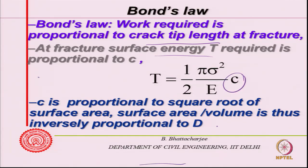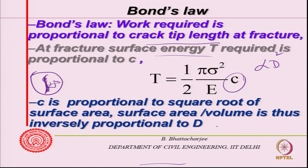So this C - supposing I am breaking a large aggregate down into smaller aggregate, the C would be related to the new one I am creating. It is related to the square root of surface area because if the diameter changes, surface area is proportional to πD². So C is proportional to the square root of surface area.